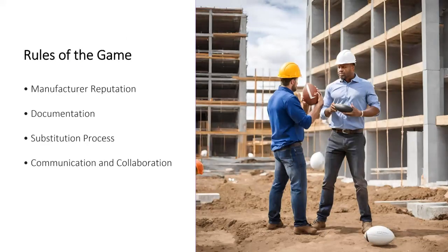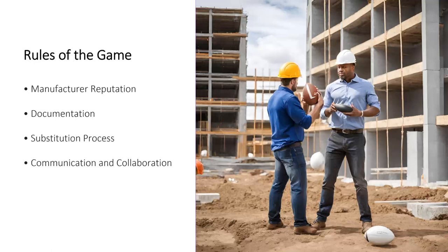The reputation and track record of the product's manufacturer or supplier plays a significant role in the specification process. In today's game, manufacturers need to have three-part guide specs, drawing details, building information modeling or BIM, technical literature, as well as samples. In the event that a specified product becomes unavailable or needs to be substituted, there should be clear rules and procedures for substitutions, typically involving the approval of architects and project stakeholders. Effective communication and collaboration between architects, specifiers, contractors, and product manufacturers is crucial.